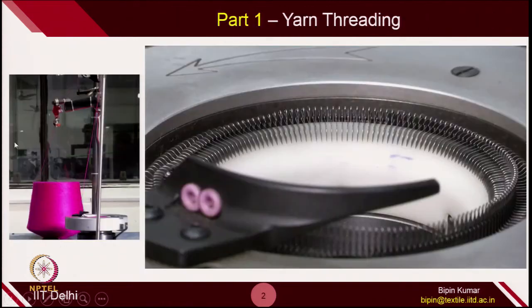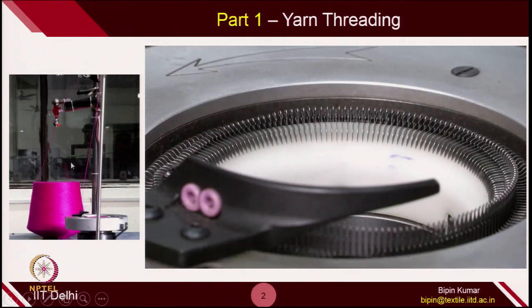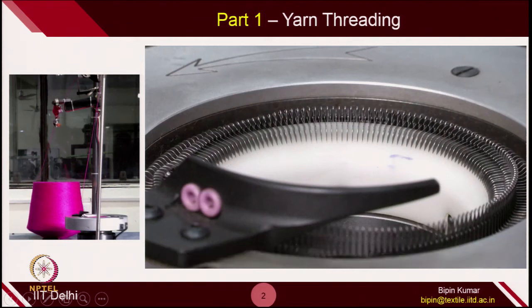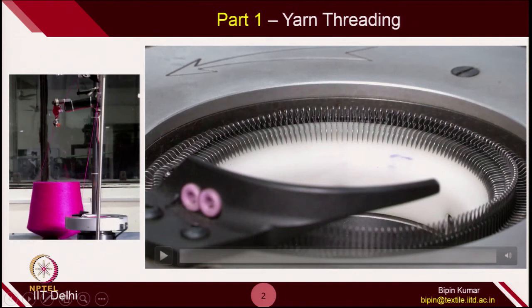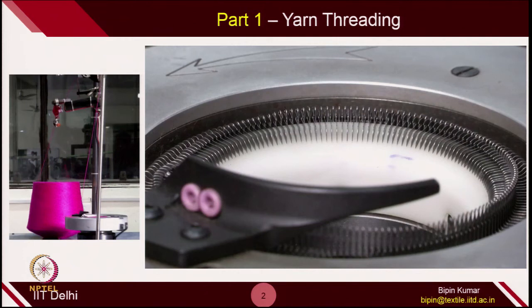This type of machine is actually used to create tubular fabrics, and especially for making socks. Let's see how it works. This is the machine. If you look at it, you have the yarn on the top of the machine platform, and this is the cylinder — here is the zoomed part of that cylinder. The first thing is how we place yarn on these machines, which you can see through this video. This is called yarn threading.